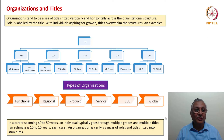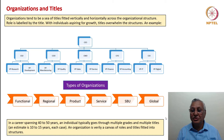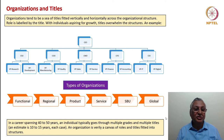Organizations are the primary vehicles to enable groups of people to undertake certain tasks and achieve certain goals. We have discussed in the previous lecture several types of organizations — functional, regional, product, service, strategic business unit, and global matrix. Each organization typically has a Chief Executive Officer at the helm and several CXOs: Chief Scientific Officer, Chief Operating Officer, Chief Marketing Officer, Chief Financial Officer, and so on. Each of these CXOs is supported by several functional heads.